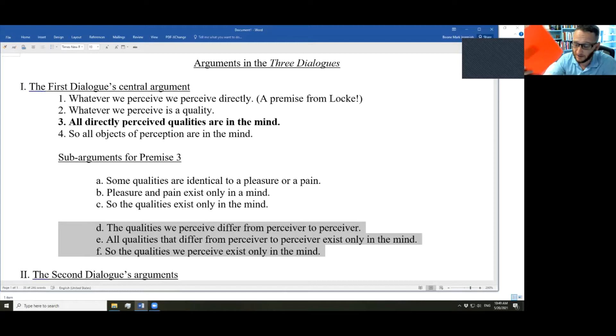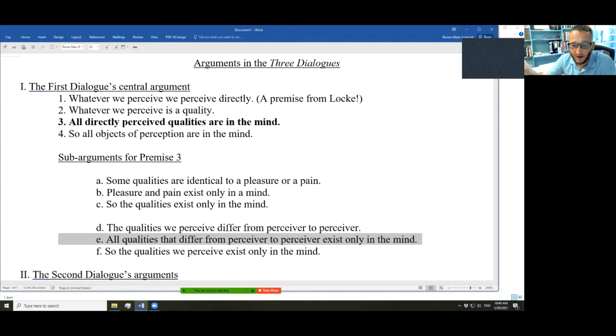Maybe you'd see a slightly different shade of red. If you're colorblind, you might not see red at all. You might see some version of gray or something. So what does that mean? Well, the qualities that we perceive differ from perceiver to perceiver. But every quality that is different between one mind and another mind must actually exist only in the mind. Therefore, qualities we perceive exist only in the mind.